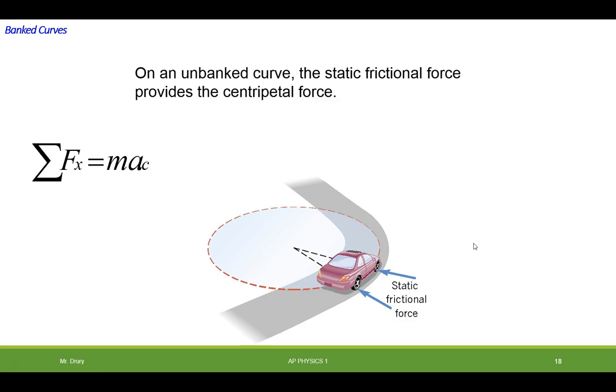So we know that all the forces have to equal mass times centripetal acceleration, and the only force in this case really is static friction. So we end up with the force of friction is equal to mv squared over r.